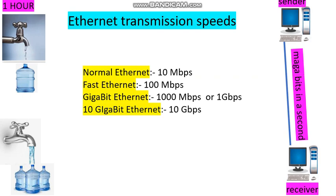If the receiver can receive 100 megabits in one second, then the data transfer rate is 100 Mbps and we call that Ethernet as Fast Ethernet. If the receiver can receive 1000 megabits in one second, then the data transfer rate is 1000 megabits per second and we call that Ethernet as Gigabit Ethernet. If the receiver can receive 10 gigabits in one second, then the data transfer rate is 10 gigabits per second and we call that Ethernet as 10 Gigabit Ethernet. That is, Ethernet transmission speeds are constantly increasing.